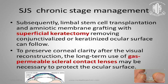Gas-permeable scleral contact lenses — large 18 to 20 mm lenses, formerly called Boston scleral lenses or PROSE lenses — don't touch the cornea. You fill them with saline like a tea saucer, and the patient wears them as daily wear lenses. Photophobia is much reduced and they give the epithelium a chance to heal.